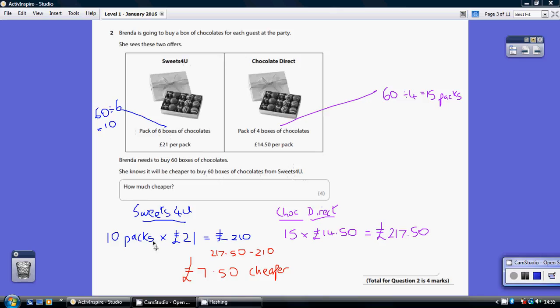Those packs cost £21 each, so 10 lots of £21 is £210. So £210 from Sweets for You.